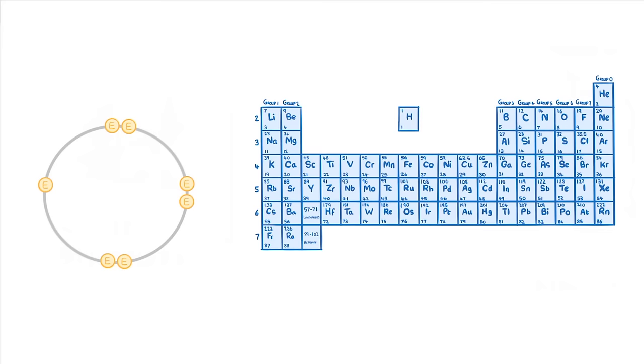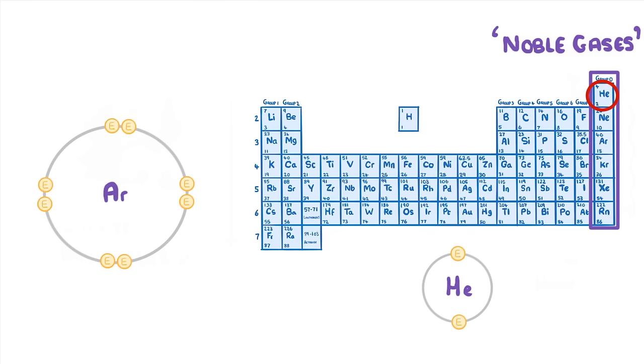As we said before, group 0 is a bit different. These elements are called the noble gases, and they all have full outer shells. So argon, which has 3 shells, has 8 out of 8 in its outer shell. While helium, which only has 1 shell, has 2 out of 2. Because if you remember, the first shell can only hold up to 2 electrons.